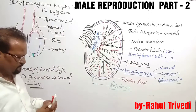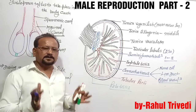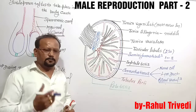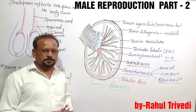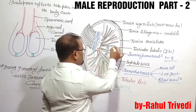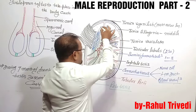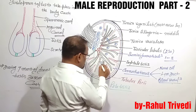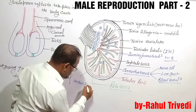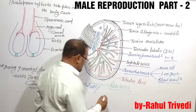The testis also has another function: it plays a role as an endocrine gland. In the connective tissue, a few very important hormone-secreting cells are present. These cells are called interstitial cells, also known as Leydig cells.